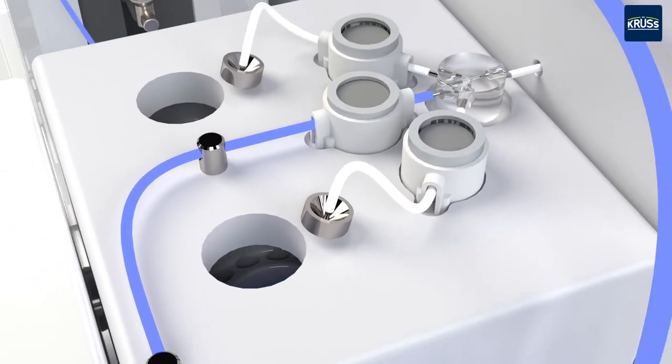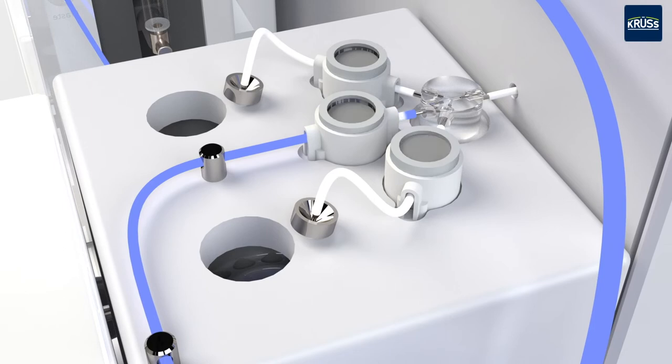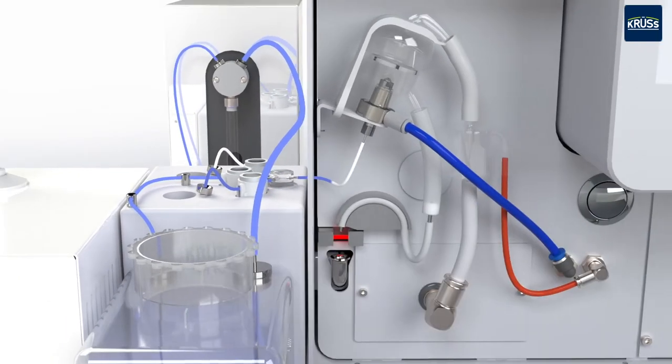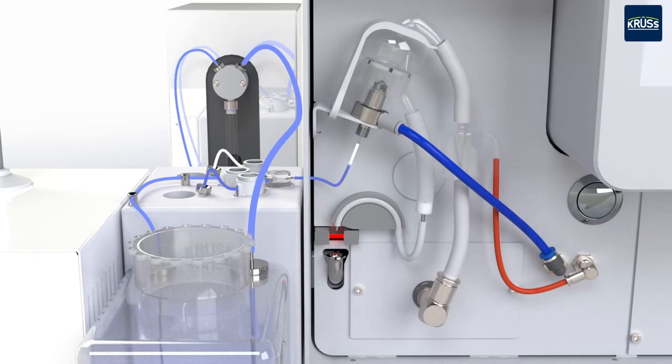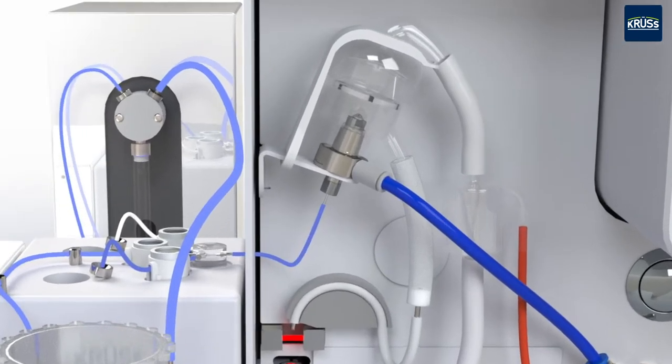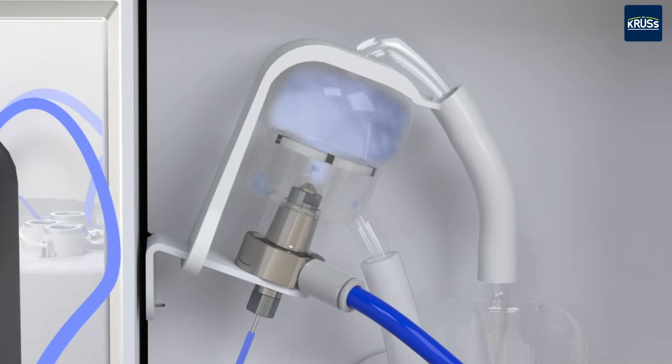In the next step, magnetic valves are opened which transfer the diluted sample into the AES where the measurement occurs. The diluted sample is aspirated into the nebulizer by the venturi effect and nebulized into very small droplets.